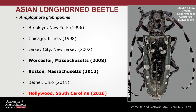Another wood-boring beetle we cannot skip when talking about invasive insects in Massachusetts is the Asian Longhorned Beetle — probably the most infamous invasive insect, the most well-known. It is not something we hope to have in our state, although we do, and it is not something we hope other states will have to deal with.